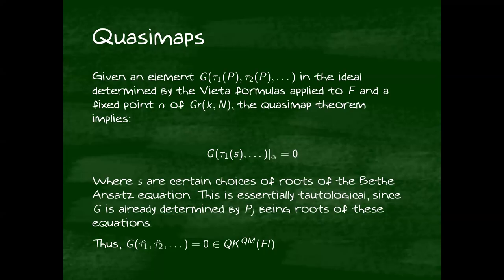The other part is quasi-maps. If you have some ideal determined by these Vieta formulas, then tautologically, an element in this ideal g is going to restrict to zero at all of the fixed points if you apply the quasi-map construction. Because it's something that's determined only by the fact that the p_i are roots of the beta equations. So no matter which roots you pick, these relations will be satisfied. So what that means is that any of these relations we've obtained via the Vieta formulas also hold in the quasi-map ring.